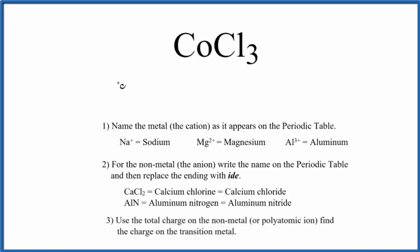So we'll start and write the name for Co, just as it appears on the periodic table. So we have cobalt, then we write the name for the Cl. And at this point, we have cobalt chlorine. But for the chlorine, we change the ending from I-N-E to I-D-E. This gives us cobalt chloride.